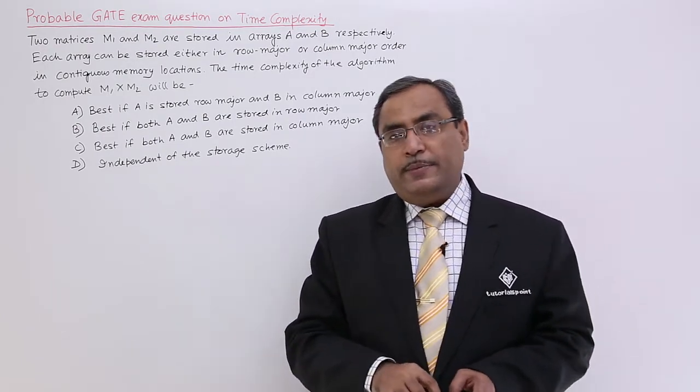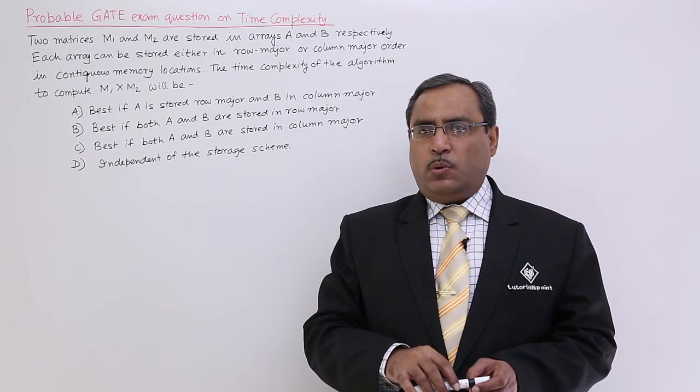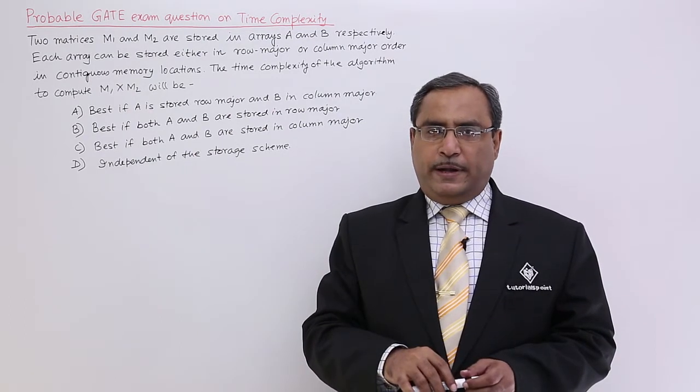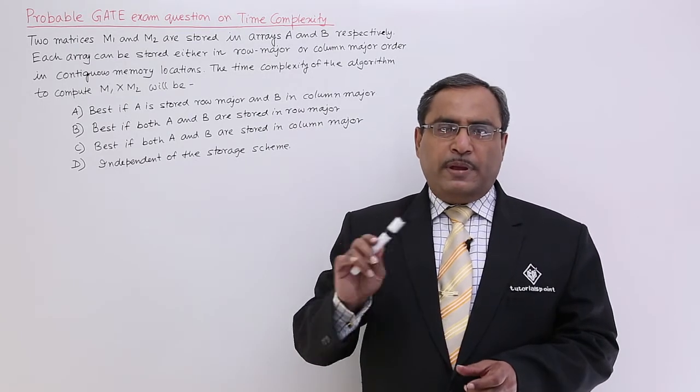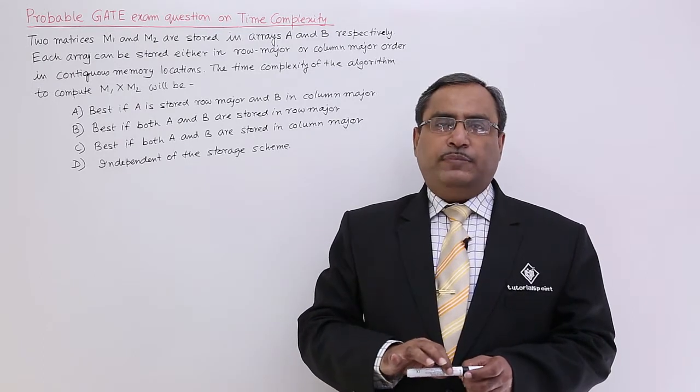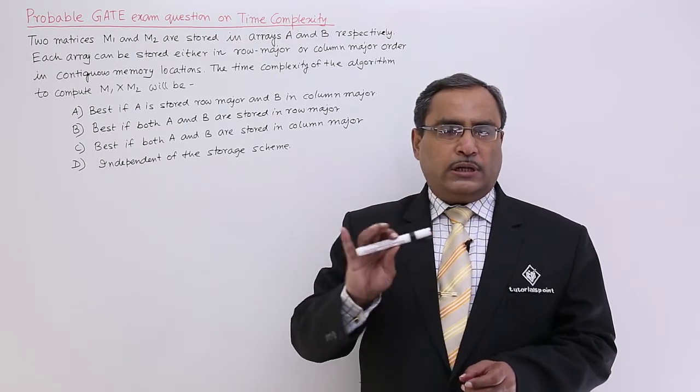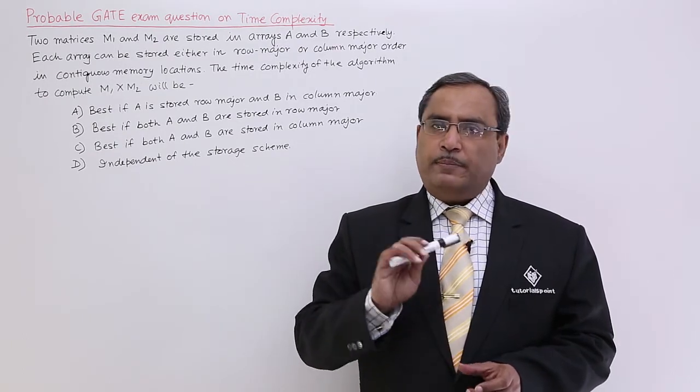These are the four options we are having. Always remember, whenever you are trying to access one location's content depending upon the respective row number and the column number from the memory, then it is irrespective of the mapping of that array onto the computer's memory. Whether it is row major or whether it is column major.